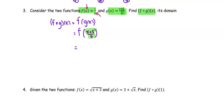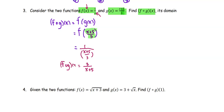When we use this input, the function f gives us the reciprocal of the input, which is 1 divided by (x + 5)/3. We then write it as 3/(x + 5) for the result of f∘g(x), the composition of f and g.